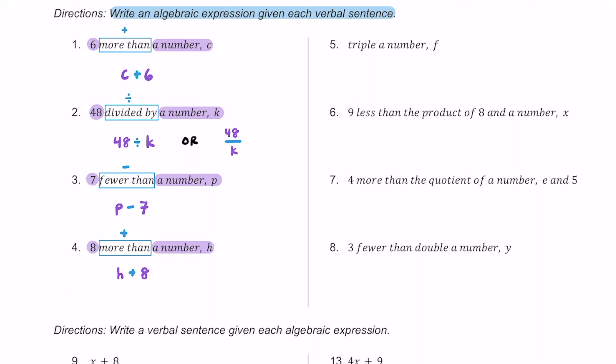For number five, we have triple a number f. We have one variable, f, and we're going to be tripling it. When we triple something, we are multiplying it by three. Instead of writing f times three, we write 3f, where three is the coefficient and f is the variable. So 3f is this algebraic expression.